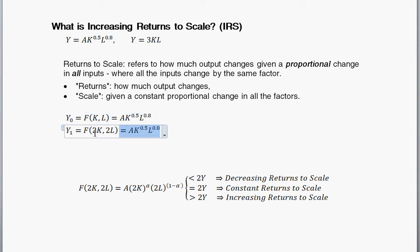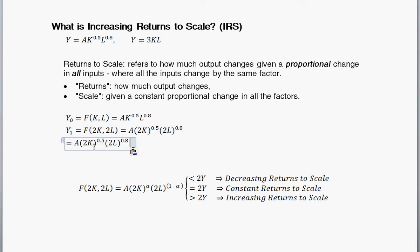Starting off with this production function, we're going to double the level of capital. So, we put a 2 in front of capital. Then we're going to double the amount of labor. So, we put a 2 in front of labor.